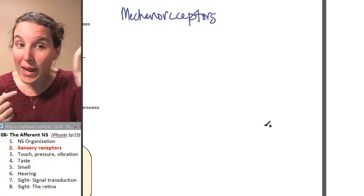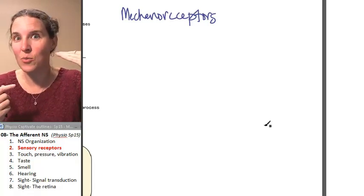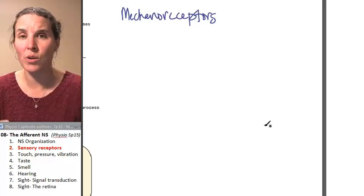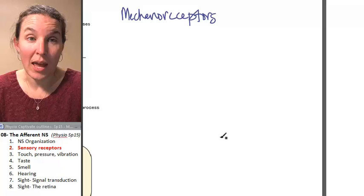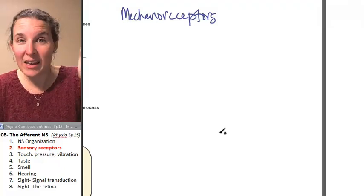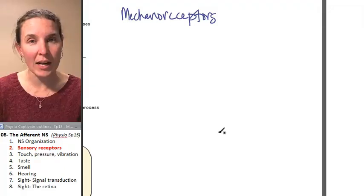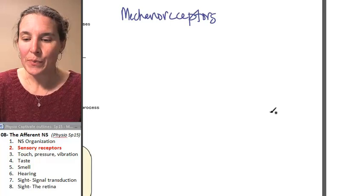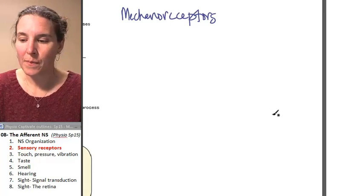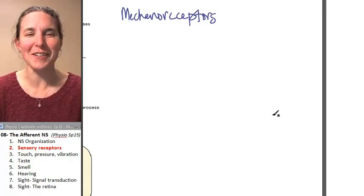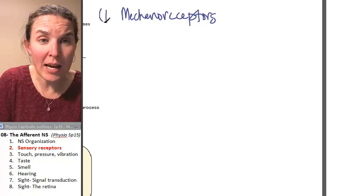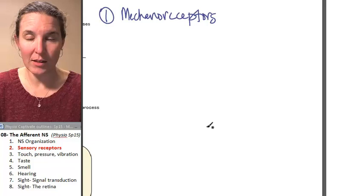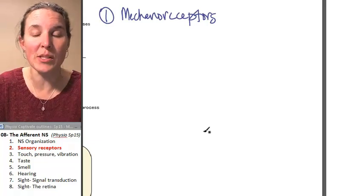Hearing is actually sound waves that whack up against your tympanic membrane, your eardrum. And that banging is interpreted by the brain as sound. Pressure, like blood pressure, that's a mechanoreceptor. So that's one type of sensory receptor that we can have.